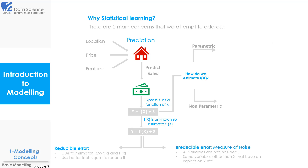Now in our prediction problem, we said that we can express our dependent variable, that is sales, as a function of predictors, that is location, price, etc. We also said that we don't know the real relationship between y and x, but we will approximate it using an estimate of f(x). So the next question is: how do we do it? Well, there are two approaches — parametric approach and non-parametric approach.